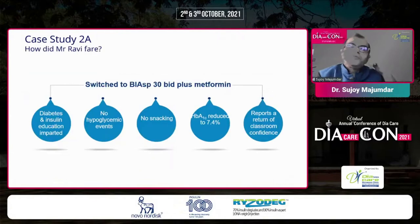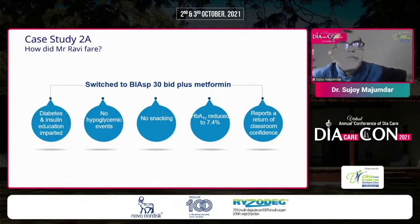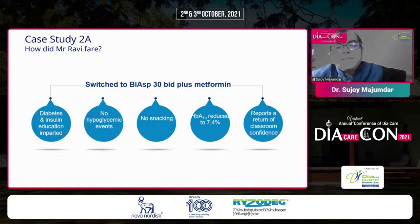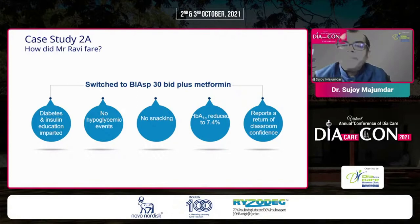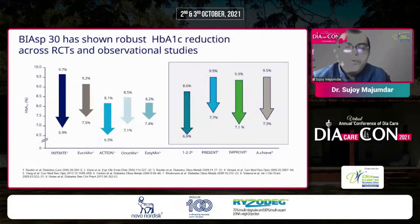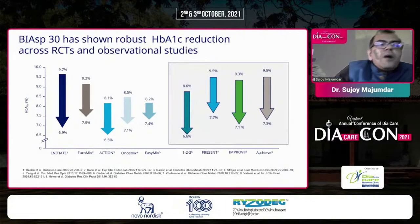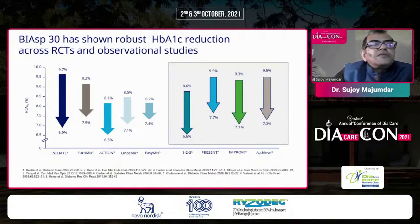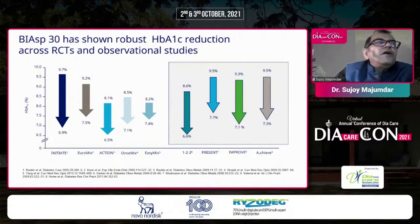This patient was switched to insulin BIAsp 30 twice daily in addition to metformin. He was given diabetes and insulin education, and the insulin dose was titrated to eliminate recurring hypoglycemia events. He was specifically asked to avoid snacking, which he could manage since there was no hypoglycemia. With this treatment, over approximately three months, HbA1c reduced to 7.4, and the patient returned to classroom teaching with more confidence. Evidence shows BIAsp 30 provides a robust HbA1c reduction of 1.2% to 1.5% across randomized controlled trials and observational studies.